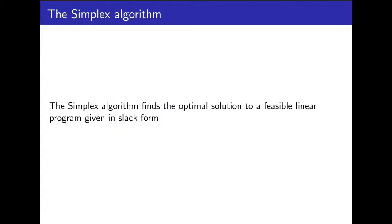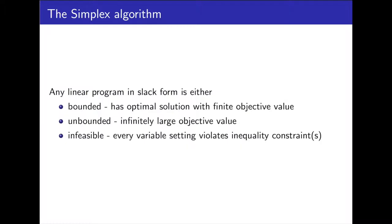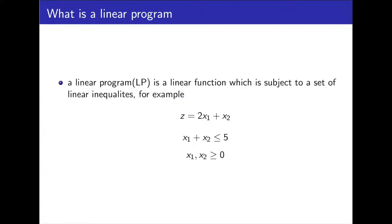Hello and welcome to this lesson on the simplex algorithm. For a feasible linear program in slack form, the simplex algorithm will find the optimal solution. Any linear program in slack form satisfies one of three cases. Case 1: bounded — the feasible region is a convex hull, and the objective function has a finite optimal solution which is a vertex of the convex hull. Case 2: unbounded — the entering variable can be increased indefinitely to produce an arbitrarily large objective value. And case 3: infeasible — there is no variable setting which satisfies all constraints.